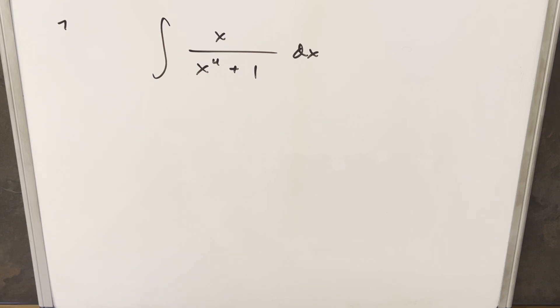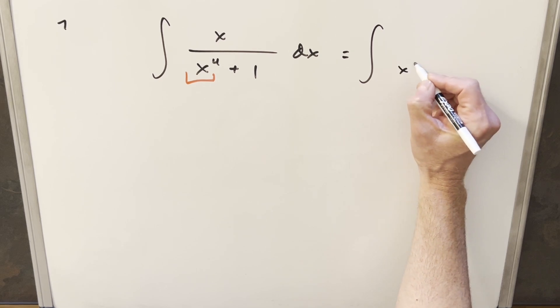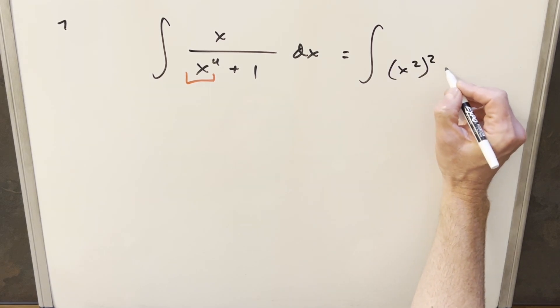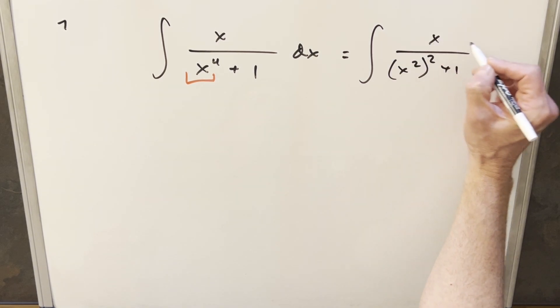I think what I want to do here is a u substitution, and I think the way to go is probably just rewriting this x to the 4th. What I can do is actually if I rewrite this, x to the 4th I can write as x squared squared, then we'll have our plus 1 and we'll have all this other stuff.